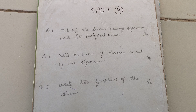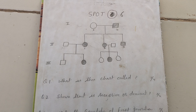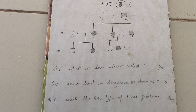In the fourth spot, you have to identify the disease-causing organism. It will be either a Plasmodium or a Trichophyton. The organism will be given either in the form of a slide or a specimen. First, identify the specimen, then name the disease caused by that organism, and then write two symptoms of that disease.